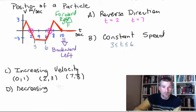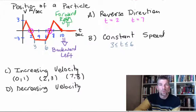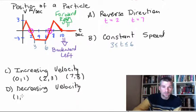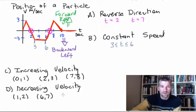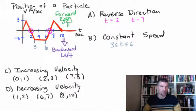What about decreasing velocity? We decrease our velocity when our velocity starts to approach the horizontal axis — not run away from it. When we run away from the horizontal axis we're going faster; when we approach it we're getting closer to zero. So we're decreasing our velocity from t=1 to t=2, from t=6 to t=7, and from t=8 to t=10. That's how you can look at the motion of a particle on a velocity graph — it's a different way of thinking, but very handy when you just want to know how something moves.